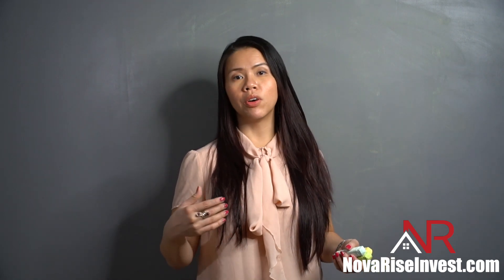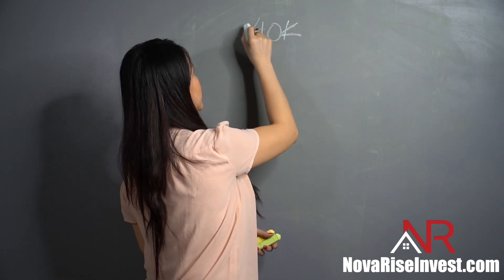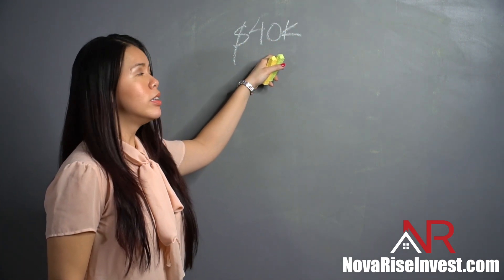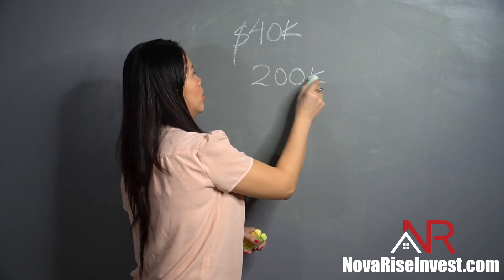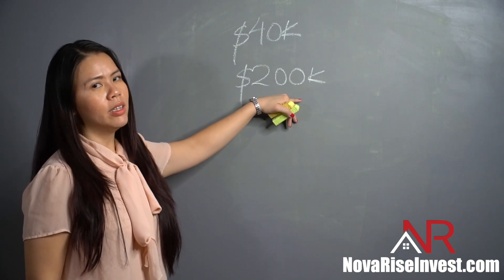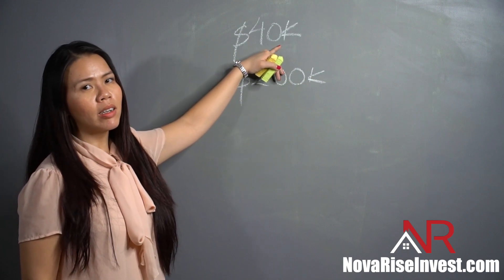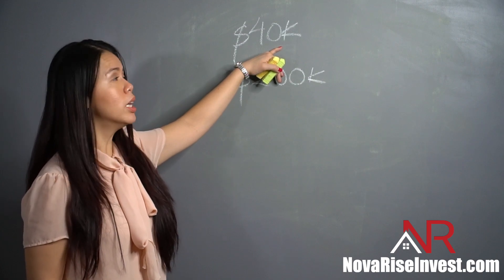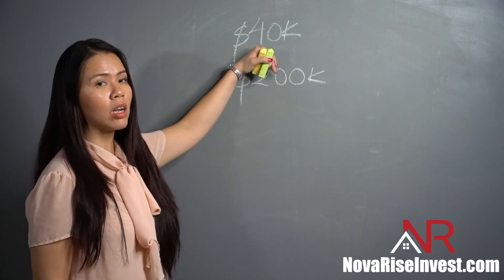First things first — it all revolves around your finances. Once you've done an assessment and know how much money you have in your accounts, you'll be able to determine how much of a down payment you can put down, accounting for closing costs and anything related to that. So let's say I have $40,000 saved. Twenty percent of $40,000 makes it a house of approximately $200K. That's assuming the $40K is not accounting for closing costs, but for purposes of doing the math we're going to use $40K.